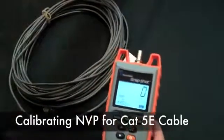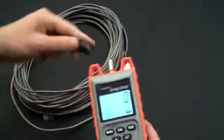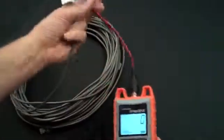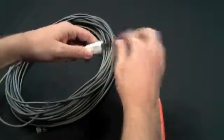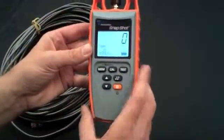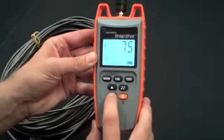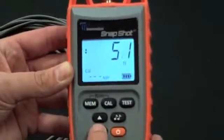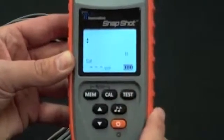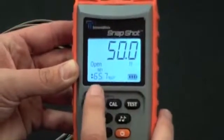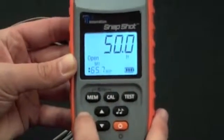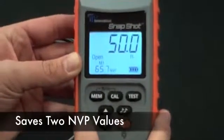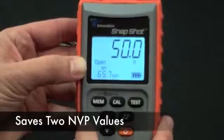We'll calibrate an NVP value for a Cat5e cable. Plug the RJ45 adapter into the unit. Plug it into your cable. We have 50 feet of cable we're going to calibrate with. So you hit the calibration button, scroll down to 50, hit the test button. Now we have our NVP value which is 65.7. If we want to save this to our memory, select the memory button. So now our M1 memory is for Cat5e of 65.7.